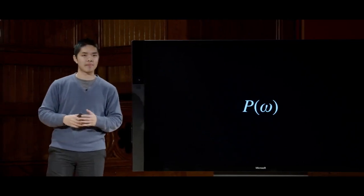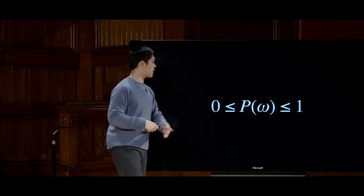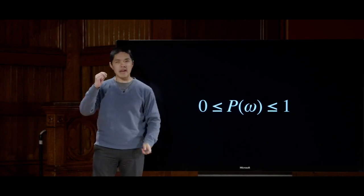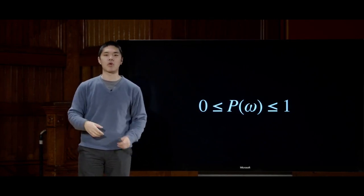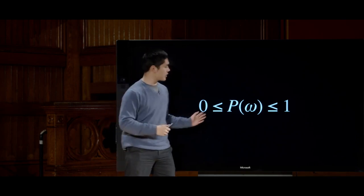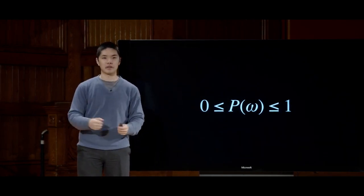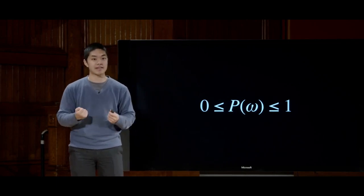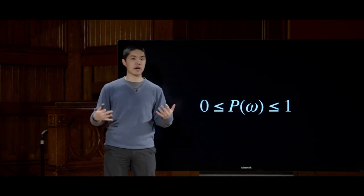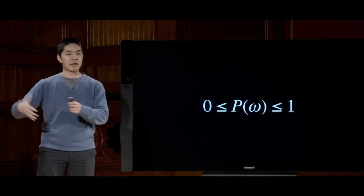There are a couple of basic axioms of probability. First, every probability value must range between 0 and 1 inclusive. The smallest value is 0, which is an impossible event — like rolling a 7 on a die with only numbers 1 through 6. On the other end, probability can range up to 1, meaning an event is certain to happen, like rolling a number less than 10 on that same die. Generally, a higher probability means an event is more likely, and a lower value means it is less likely.